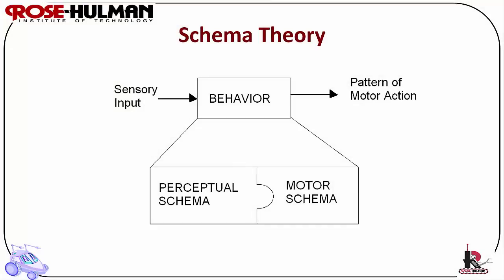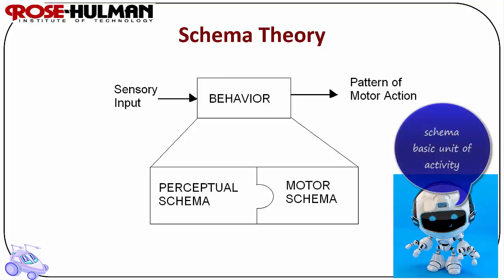Schema theory: Michael Arbib created schema theory around 1981. Arbib deduced that the brain's operating principles can be used to create learning machines. Arbib's advisor was Norbert Wiener, the founder of cybernetics. Schema is used to express the basic unit of activity. A schema consists of both the knowledge of how to act and/or perceive, as well as the computational process by which it accomplishes the activity. A schema class in C++ would contain both data and methods, representing a behavior with a perceptual schema and a motor schema.